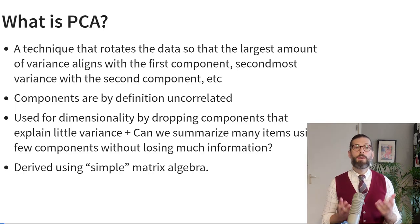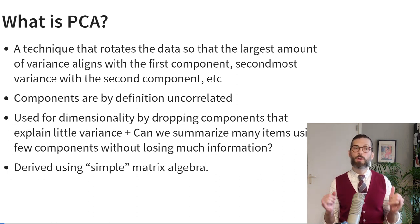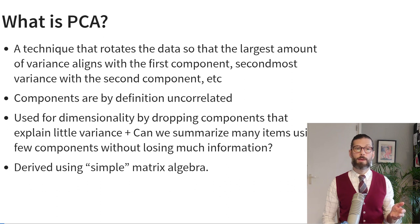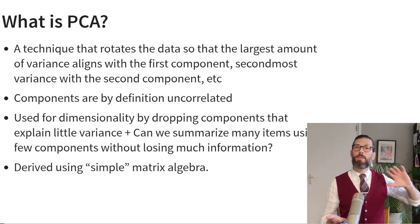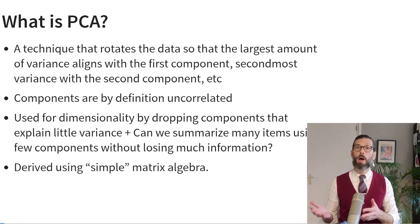Now let's get a little deeper into principal component analysis. PCA is a technique that rotates the data in space so that the largest amount of variance aligns with the first component, the second most with the second component, the third most with the third component, and so on. These components are by definition uncorrelated — so even if we start with correlated predictors, they are rotated so that the components become uncorrelated. We can use PCA by following up the rotation with a second step where we drop some components that explain only little variance. We can also use this technique to investigate whether it's even possible to reduce a larger data set to a smaller number of components.